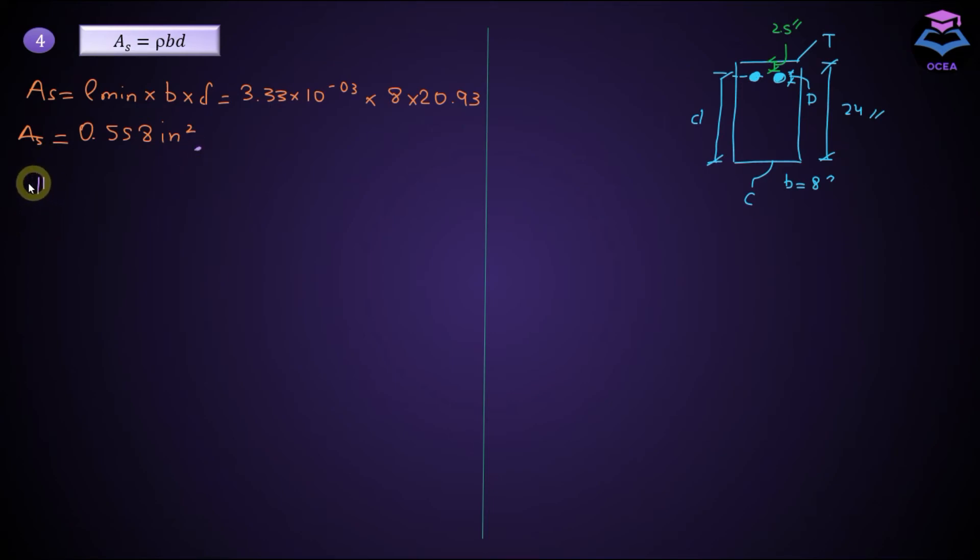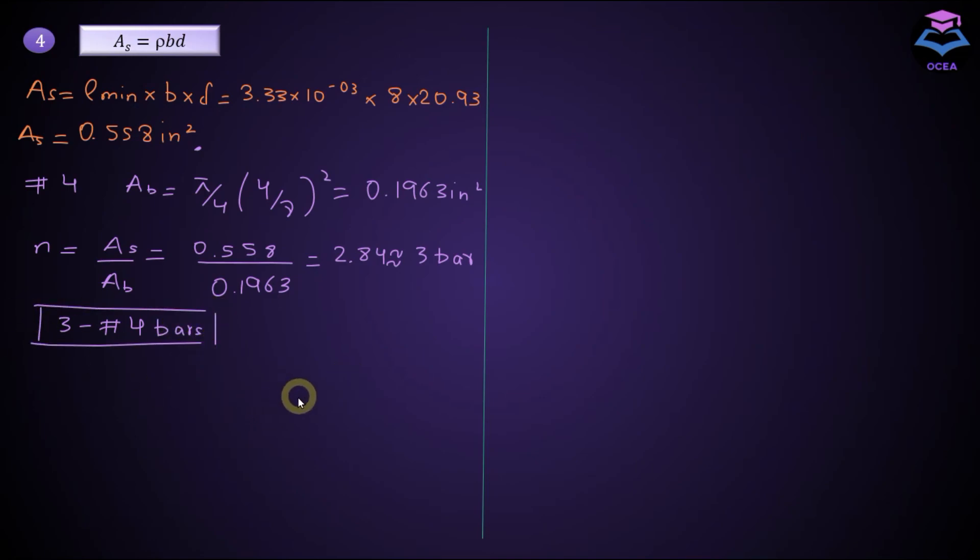Now calculating number of bars. If I use number 4 bar, the area of number 4 bar individual bar is equal to pi upon 4, 4 by 8 square, which is equal to 0.1963 inch square. And if I calculate N which is the number of bar, it's equal to As, area of steel divided by area of individual bar. So it means that we need three bars, three number four bars to be used in the section, and our final design section for flexure will be. And this is our answer.